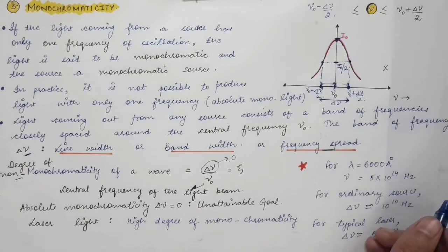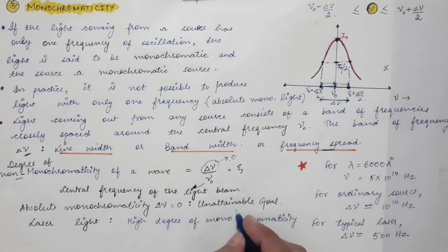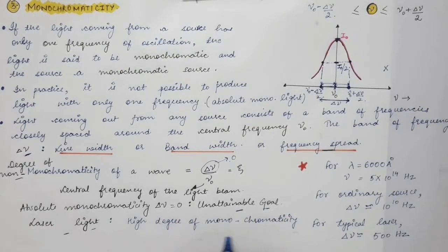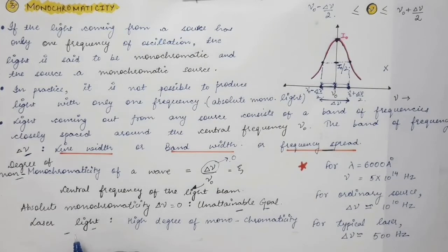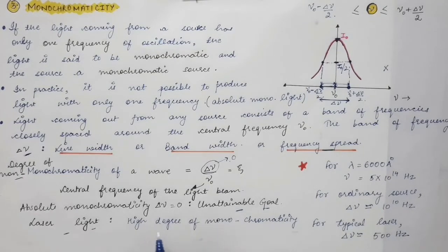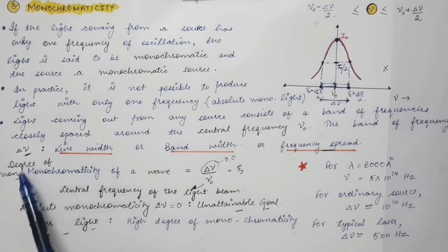As already discussed, a perfectly monochromatic source cannot be constructed, so absolute monochromaticity — that is, Δν = 0 — is an unattainable goal. Laser light has a high degree of monochromaticity compared to ordinary sources of light, or equivalently, a very low degree of non-monochromaticity.